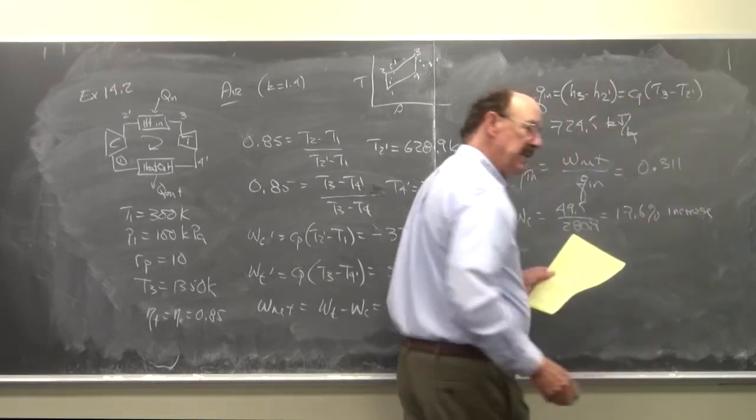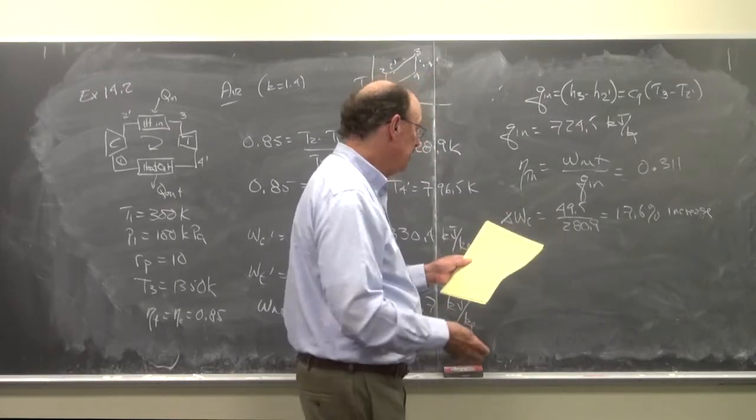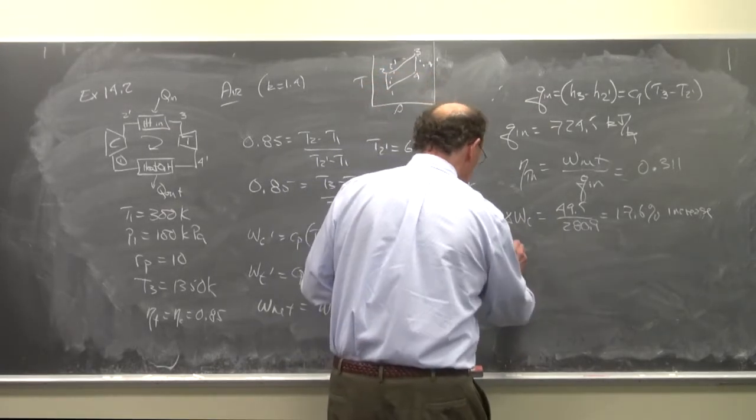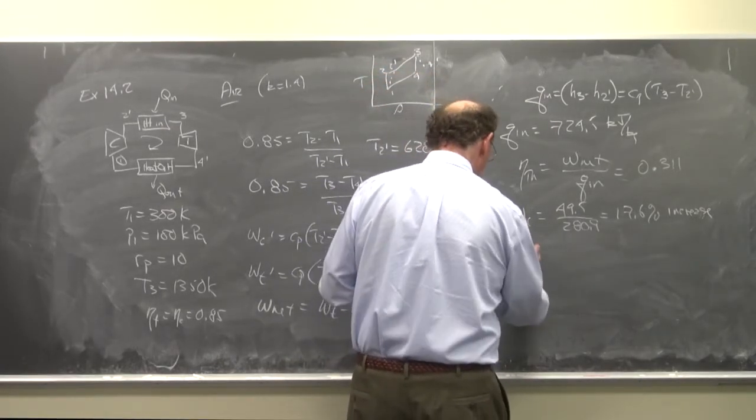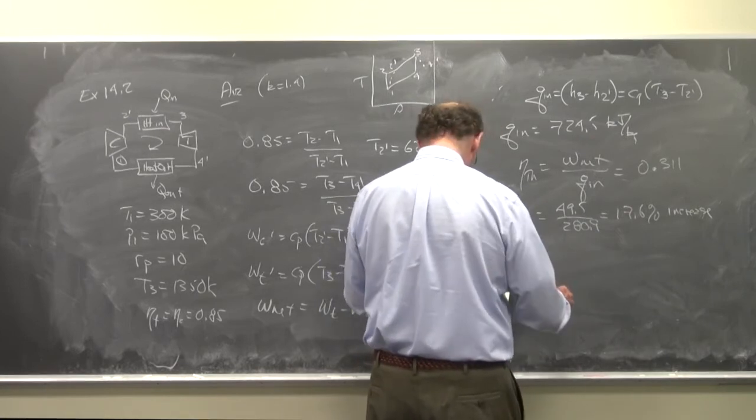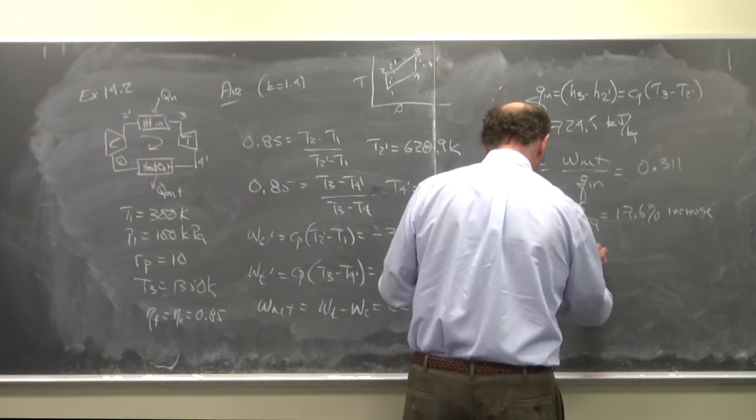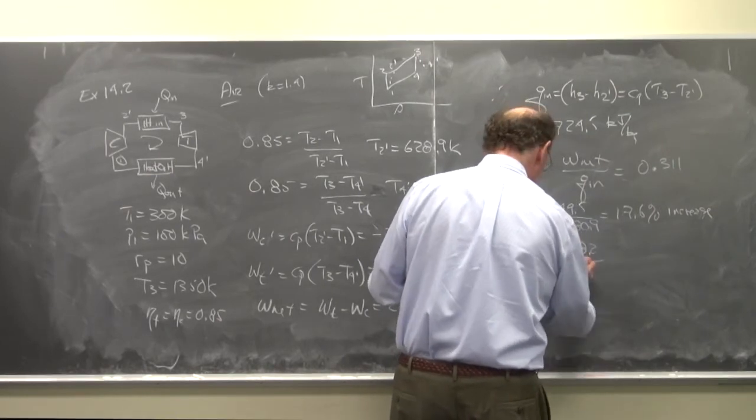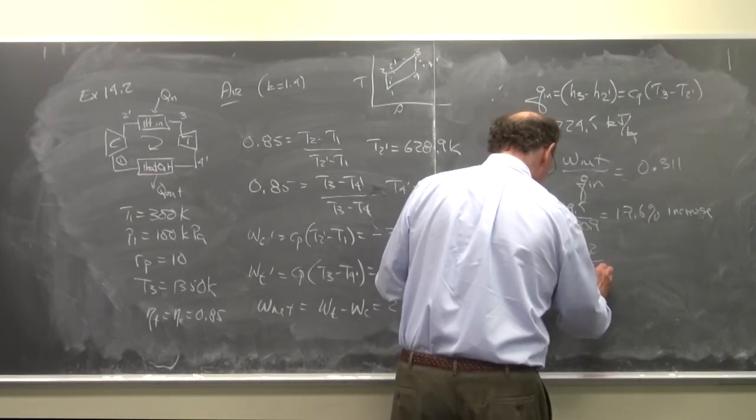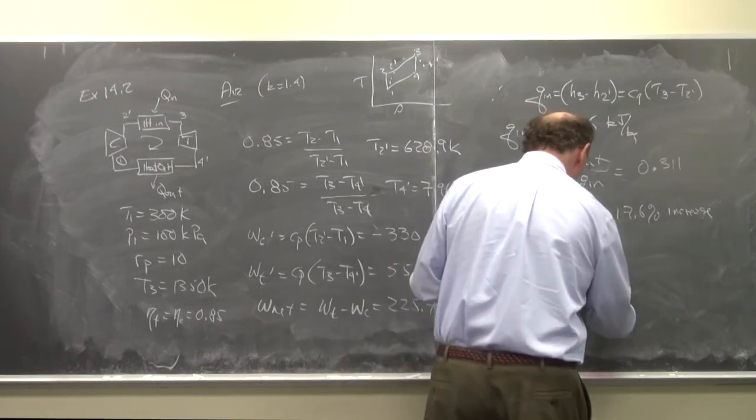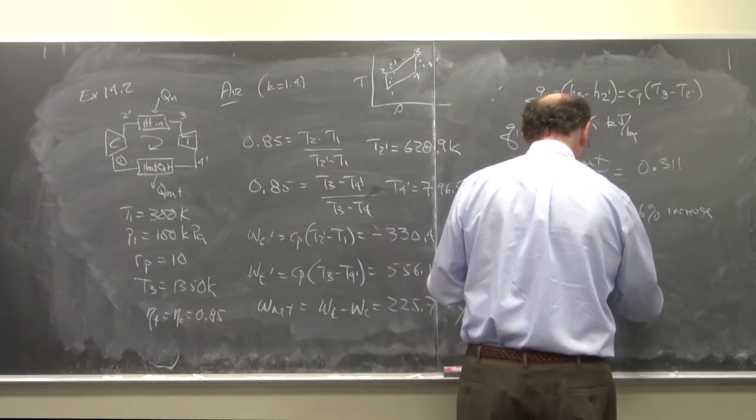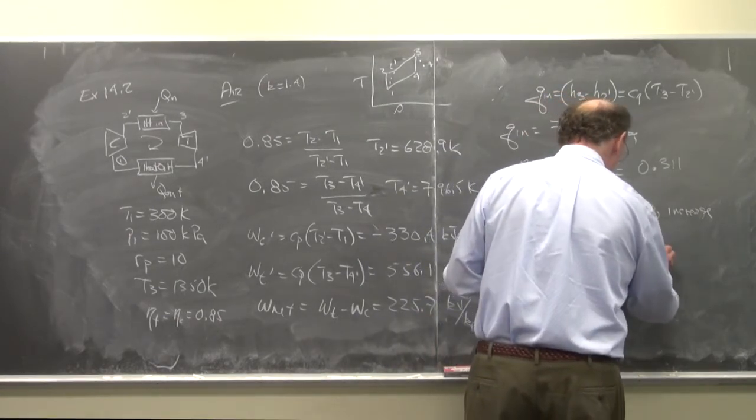So we see the compressor work increase 17.6 percent. The turbine work is going to decrease: 98 over 654.3 is equal to a 15 percent decrease.